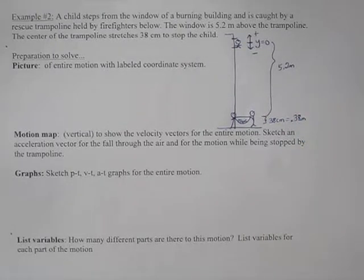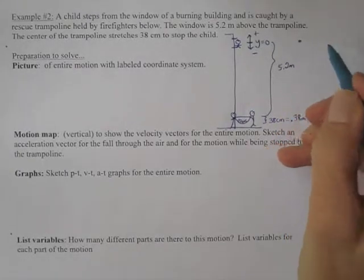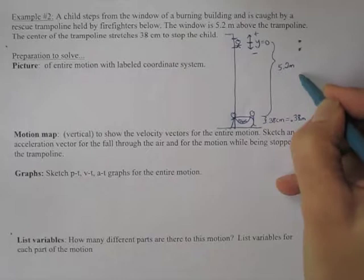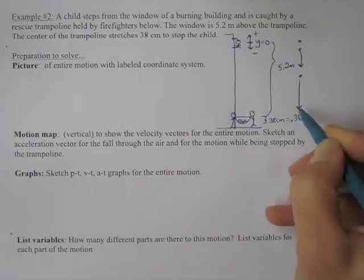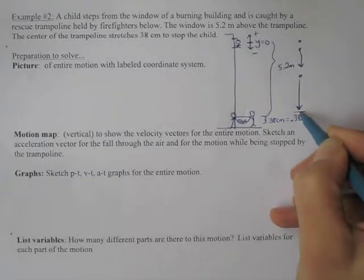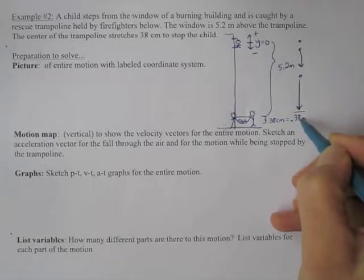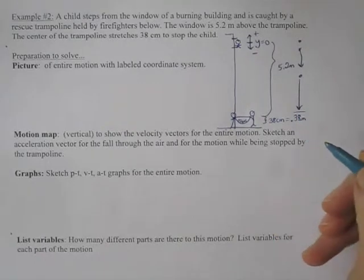Motion map. It's going to be vertical. Show the velocity vectors for the entire motion. Okay, so it starts out at rest and is speeding up in the negative direction. Now at the moment it hits the trampoline, just before it's going at its fastest, once it's in the trampoline, or the child is in the trampoline, the child will be slowing down.